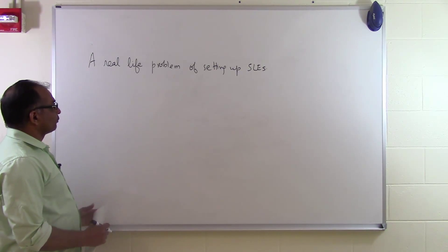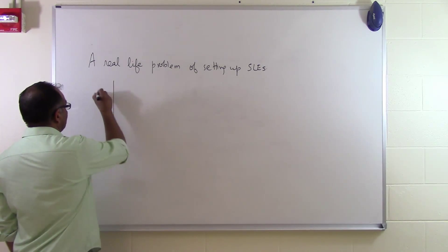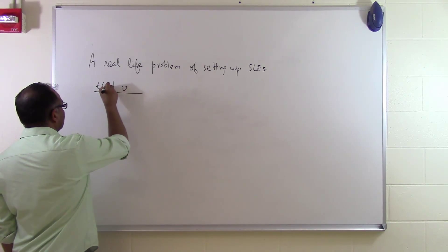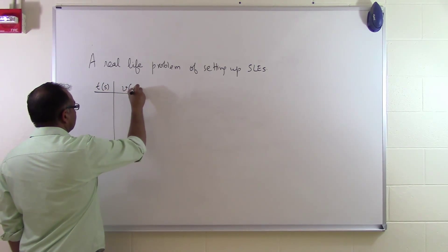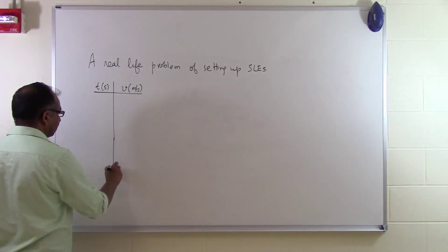In this segment we will talk about a real life problem of setting up simultaneous linear equations. Let's suppose somebody gives you the velocity of a rocket as a function of time. The rocket is going in an upward motion in a straight line.